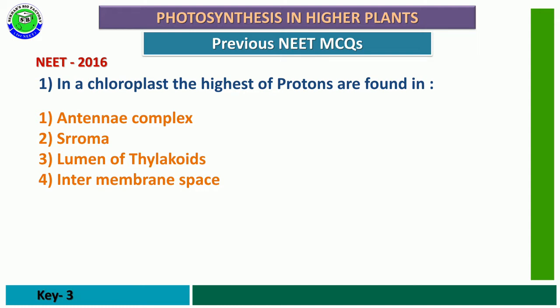The correct answer is the third option — lumen of thylakoid. According to the chemiosmotic hypothesis, due to transportation of protons from the stroma to the lumen, the concentration of protons increases in the lumen itself, which is useful for the formation of ATP molecules during the light reaction.